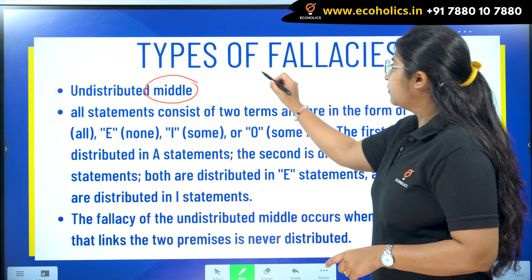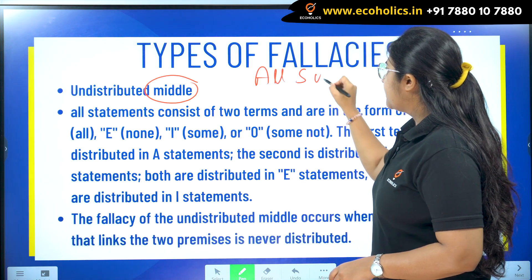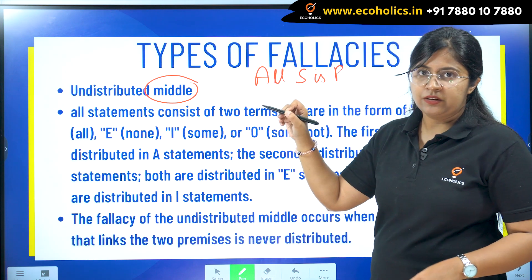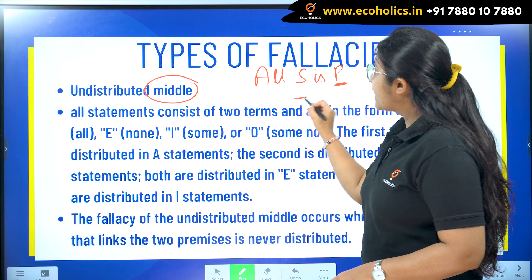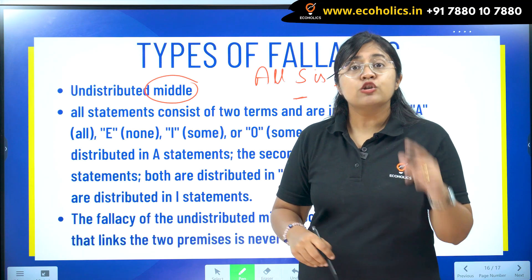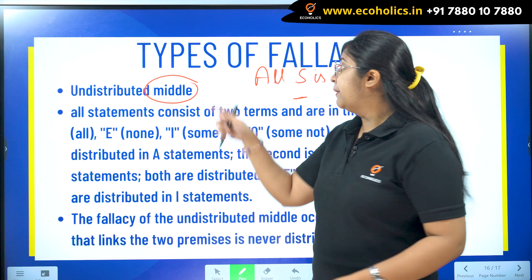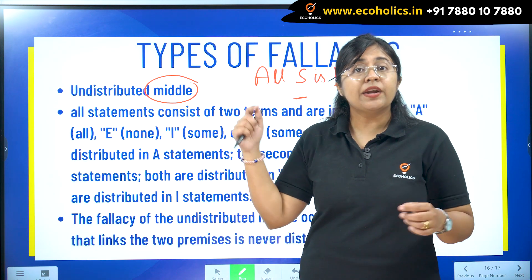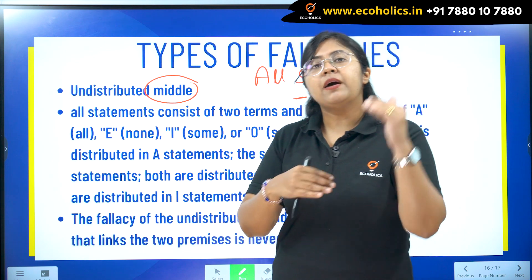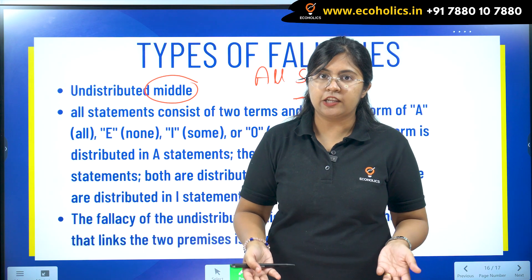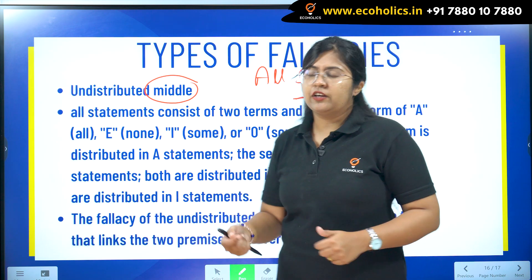For example, if I say that all subject is predicate, and then whatever is the predicate, if I use it as a subject in the next sentence, that will be a link I am drawing between these two statements. When I draw such links between these two statements in my premise, my conclusion becomes valid. But then how does it become invalid? Let's figure this out.